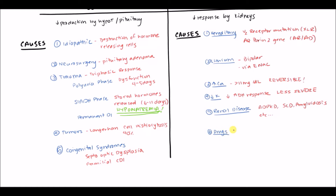There are also several drugs — interestingly, these are often used to treat SIADH, the opposite of diabetes insipidus. They include cidofovir, foscarnet (antivirals for cytomegalovirus), amphotericin B, demeclocycline, ifosfamide, and didanosine. These drugs which cause diabetes insipidus can actually be used to treat SIADH.